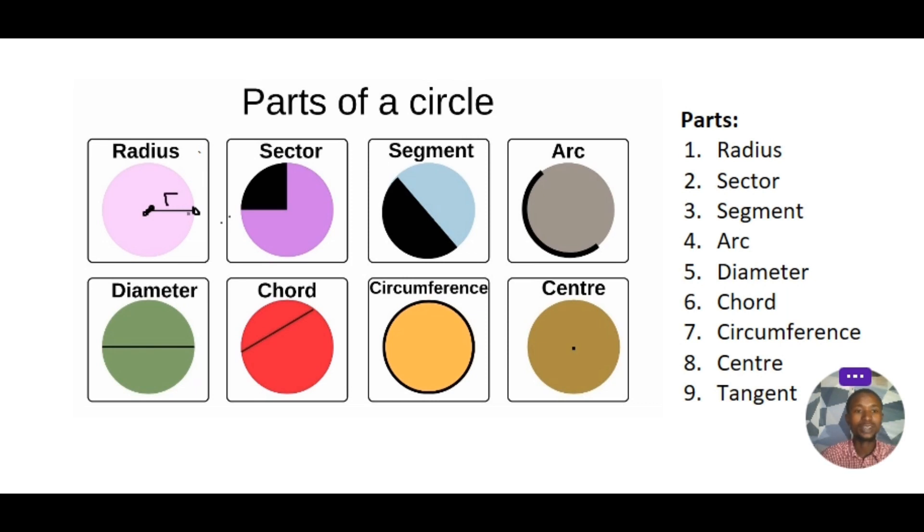Then the next is sector. A sector is a part of the circle created by two radii. So here this is the first radius and the other radius. This part is what we call the sector. We have the minor and the major sector. The minor sector is the black color, which is the small part, while the bigger part in purple is the major sector.